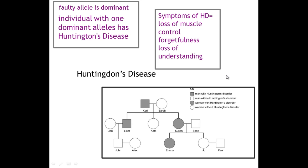We have here a family tree diagram and the family tree diagram shows whether the individuals have the disease or do not have the disease. If we look at the top line first — the parents, Carl and Sarah — Carl is a man with Huntington's and Sarah is a woman without. I am just going to give you a second to think about what you think the genotype of Carl and Sarah might be.